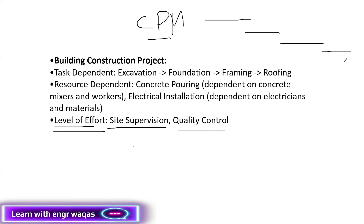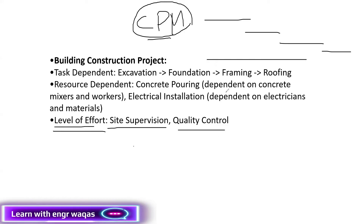All other routes will take extra time — that is CPM. So when Primavera P6 calculates CPM, if my client has instructed me that I should incorporate other plans in P6 — like a project management support team or quality control team — these are secondary things, not direct project tasks, they are supervisory tasks. Primavera P6 might make a mistake and include those tasks in CPM, and the CPM calculation will be malfunctioned.